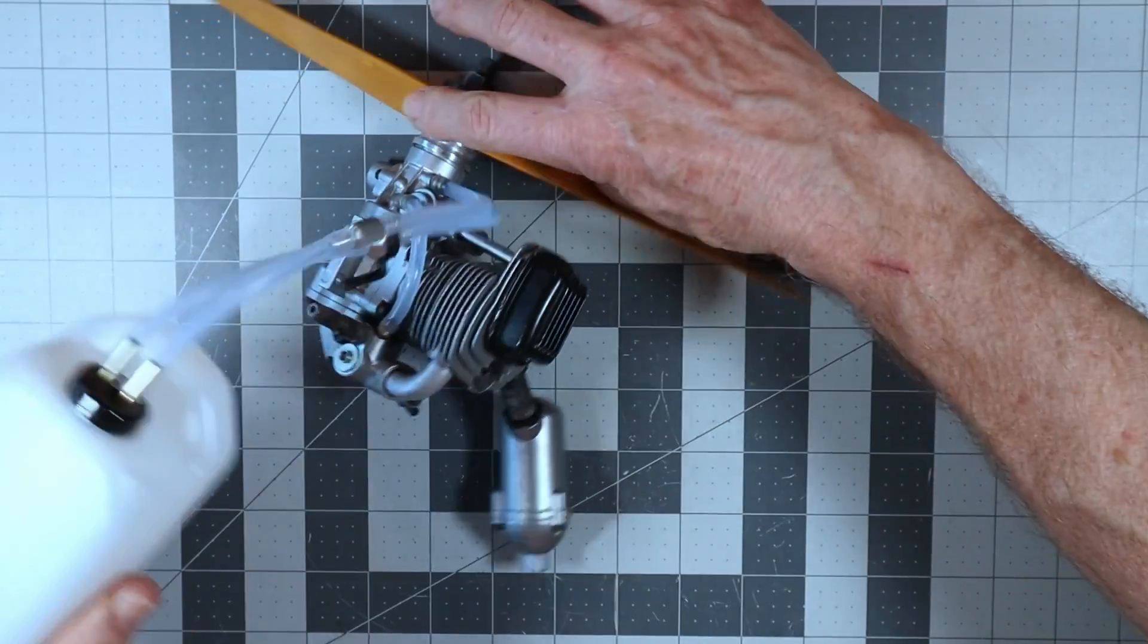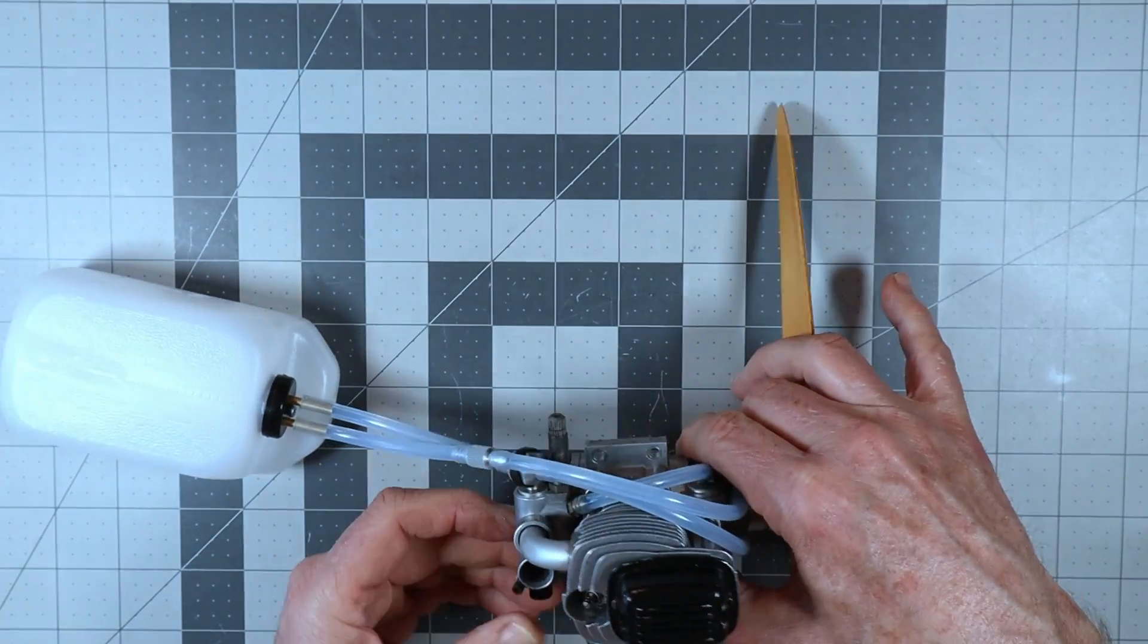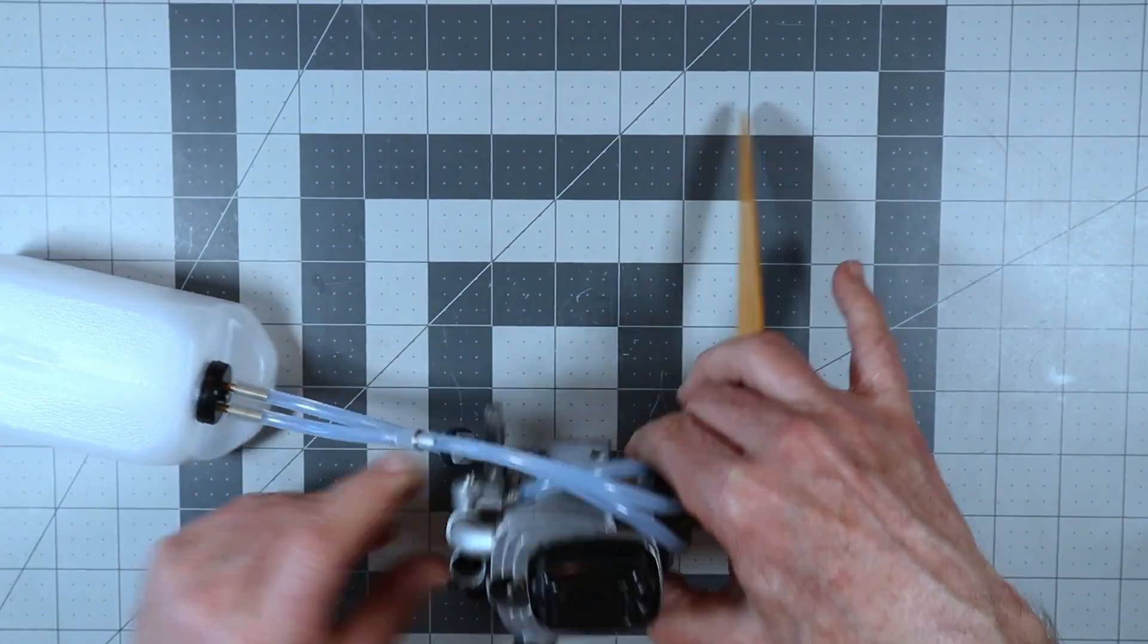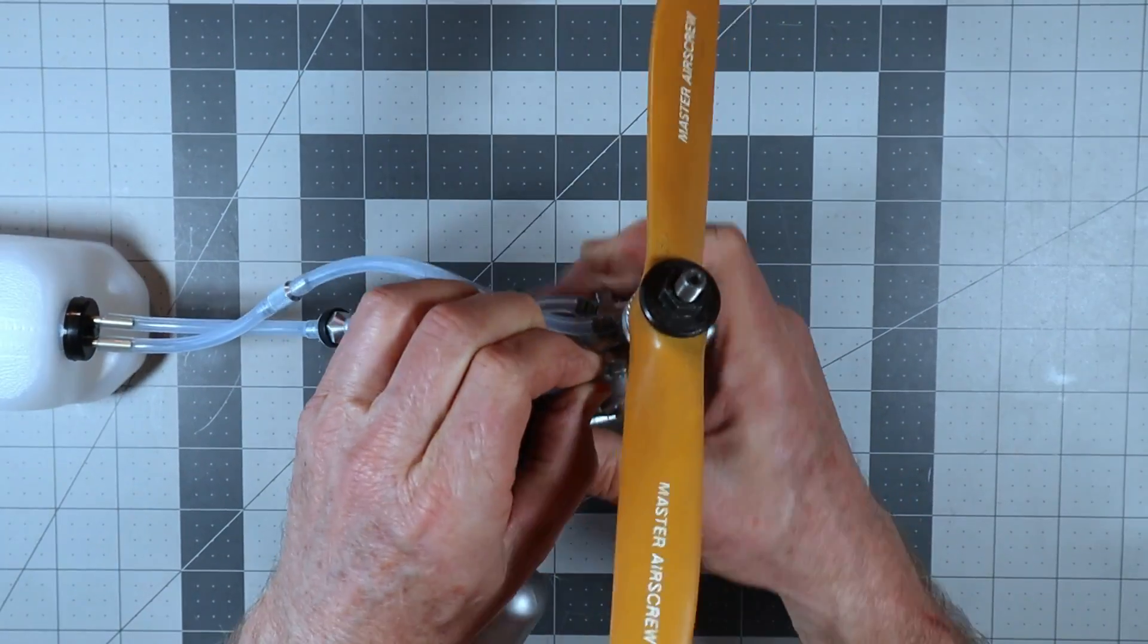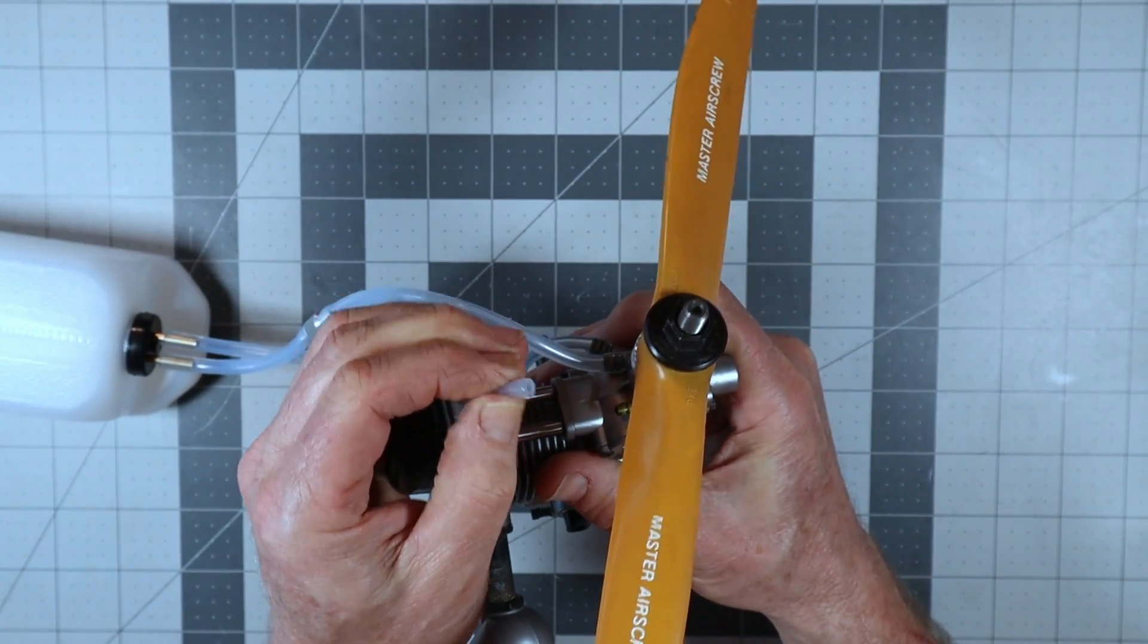So the way I do a pressure test here is I just sit here and, well, first we'll test it here to make sure there's no pressure on it. Listen, you didn't hear anything.